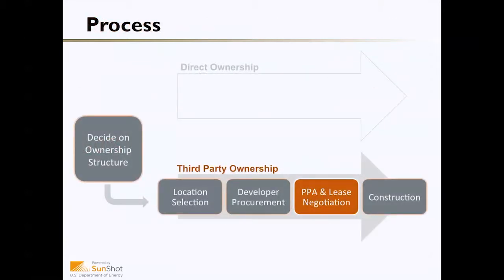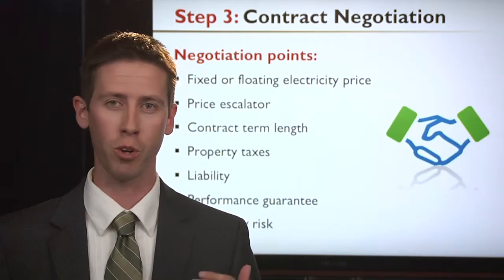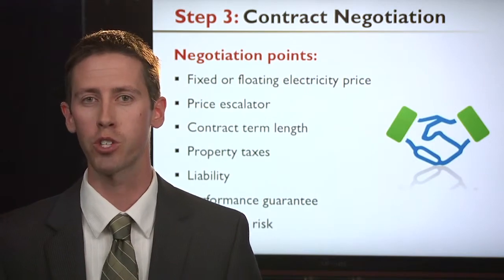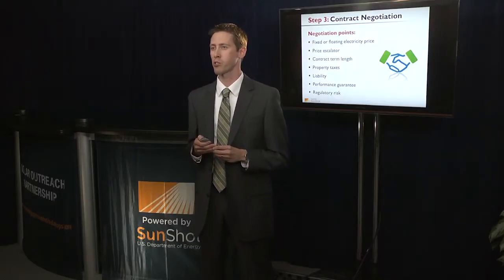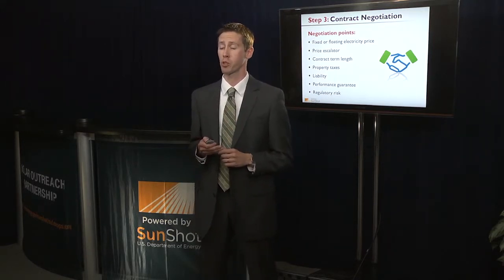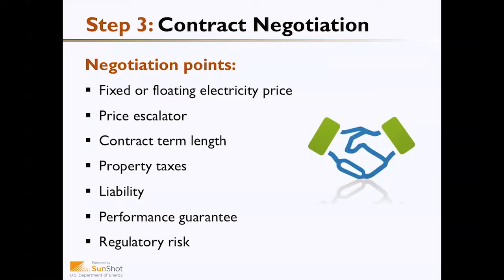Next in the process are PPA and lease negotiations — step three, contract negotiations. When negotiating with a contractor supplying electricity through a power purchase agreement, consider whether the price is fixed or floating. Is it a long-term fixed price, or does it start low with an energy escalator? Escalators are often in the 1.5 to 3 percent range, tracking increased energy costs over time. However, if escalators exceed that range, you may end up paying more over the life of the agreement than you would under a fixed-price contract at a slightly higher initial amount. Confirm that any escalator is accurately pegged to potential rises in energy prices.